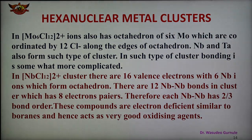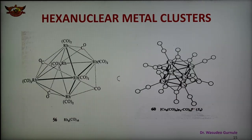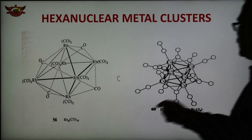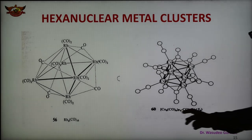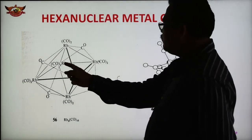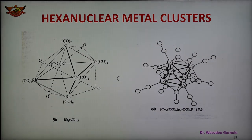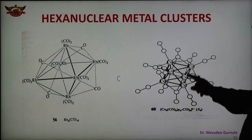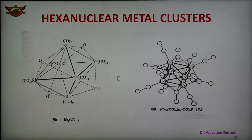In the case of carbonyl hexanuclear metal clusters, examples include Rh6(CO)16 and Co6 carbonyl clusters. In Rh6(CO)16, there are 6 rhodium atoms with terminal and bridging carbonyl groups. The cobalt hexanuclear structure is more complicated, with 6 cobalt atoms and both terminal and bridging carbonyl ligands present. These are examples of hexanuclear metal clusters with carbonyl ligands.